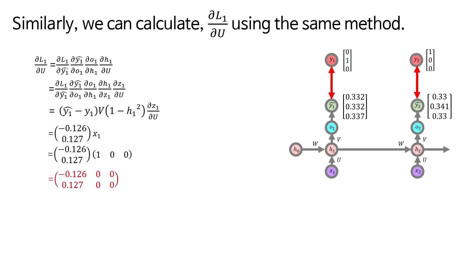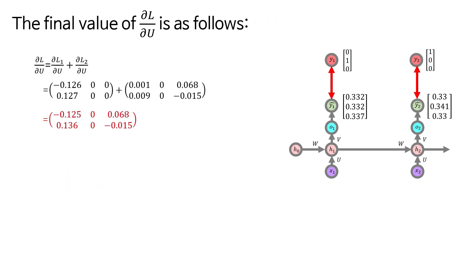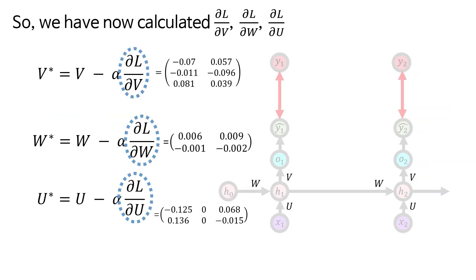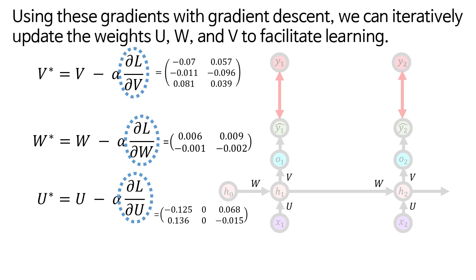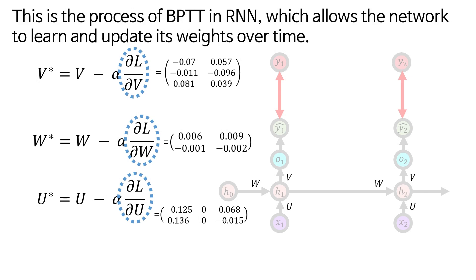Similarly, we can calculate del L1 del U using the same method. The final value of del L del U is as follows. So, we have now calculated del L del V, del L del W, and del L del U. Using these gradients with gradient descent, we can iteratively update the weights U, W, and V to facilitate learning. This is the approximate process of backpropagation through time, BPTT, in RNN, which allows the network to learn and update its weights over time.